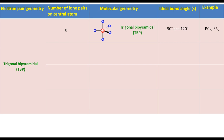For a molecule with trigonal bipyramidal electron pair geometry having one lone pair, we will put the lone pair on the equatorial position because the number of electron pairs is odd. Ignoring the lone pair will result in seesaw, also called distorted tetrahedral, molecular geometry. The ideal bond angles are 90 and 120 degrees. TeCl4 and SF4 are examples of this type of molecule.